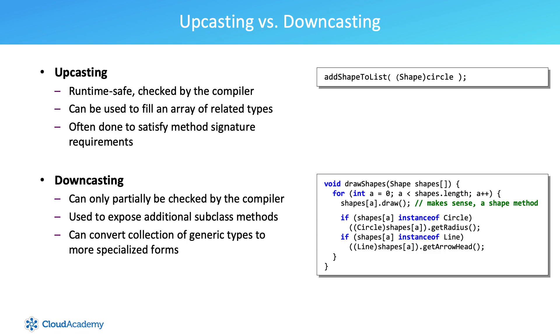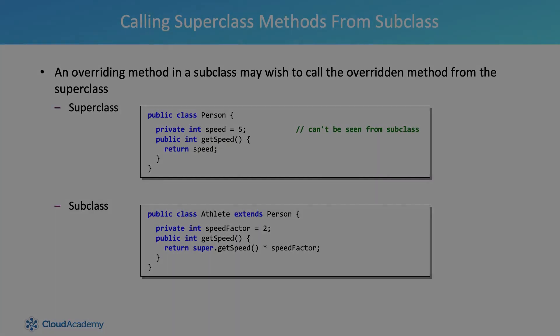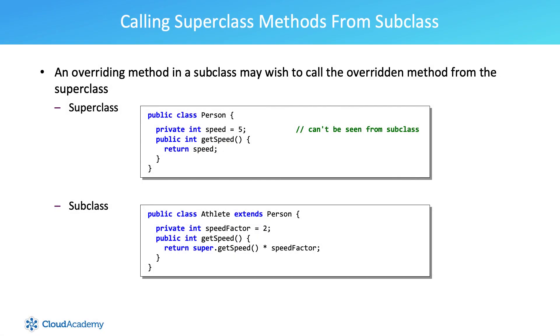We cannot, however, downcast without checking the type, because the specialized behavior may not exist. Downcasting can only partially be checked by the compiler, is often used to expose additional subclass methods, and can convert a collection of generic types to more specialized forms. If we do a bad downcast, the error will be caught at runtime, not compile time.